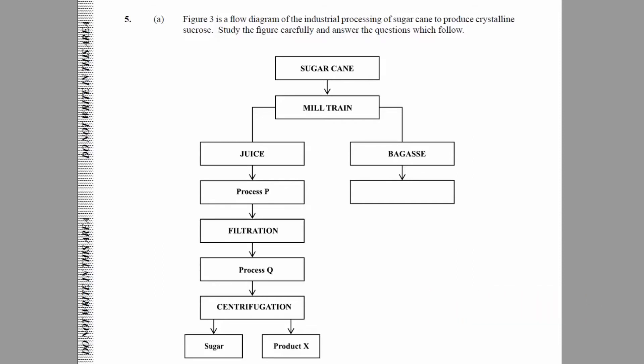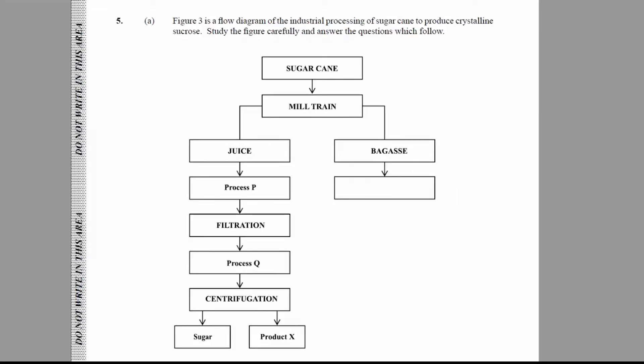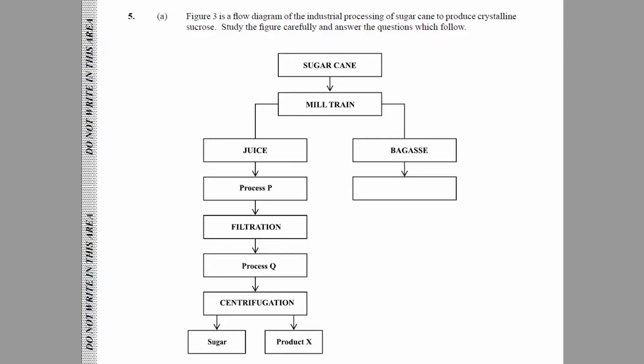The Caribbean is known for its sugar cane, Jamaica especially. Barbados for its rum, Jamaica for its rum. This question is about the extraction of sugar cane and some of the applications of the processes. This is a flow chart. Figure three is a flow diagram of the industrial processing of sugar cane to produce crystalline sucrose. Study the figure carefully and answer the questions which follow.